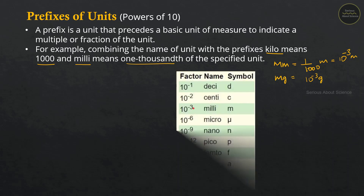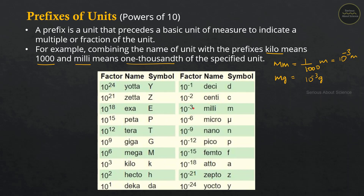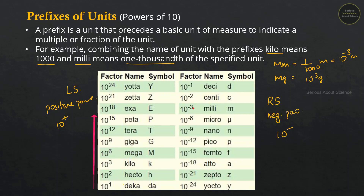This table has two sides. The left-hand side of the table contains positive powers of 10, that is, 10 raised to a positive number. For example: 10 raised to 1 is deka, 10 raised to 2 is hecto, 10 raised to 3 is kilo, 10 raised to 6 is mega, and 10 raised to 9 is giga.